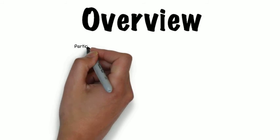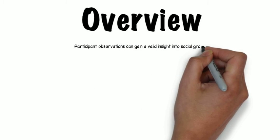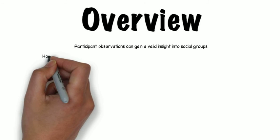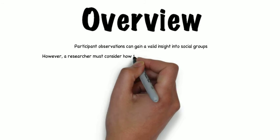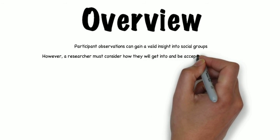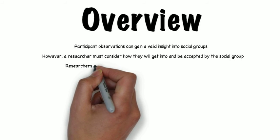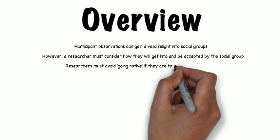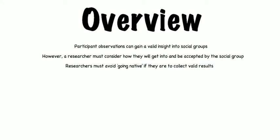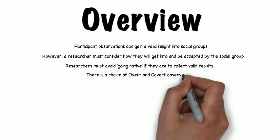To conclude, participant observations can be a useful method for gaining insight into social groups to create a picture that is true to life. However, there are several things that must be considered before starting an observation. A researcher must have the skills to make initial contact and then be accepted into the group. Once in the group, the researcher must avoid going native to ensure unbiased observations.